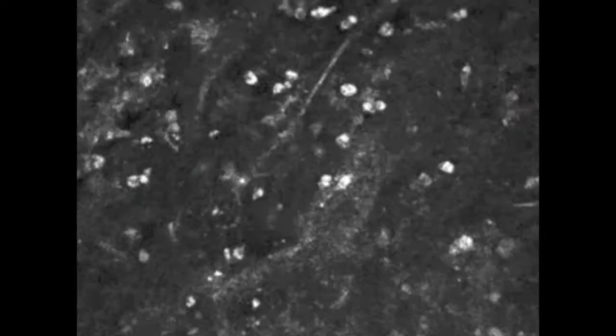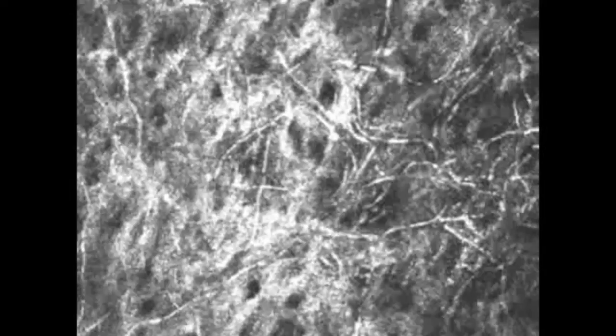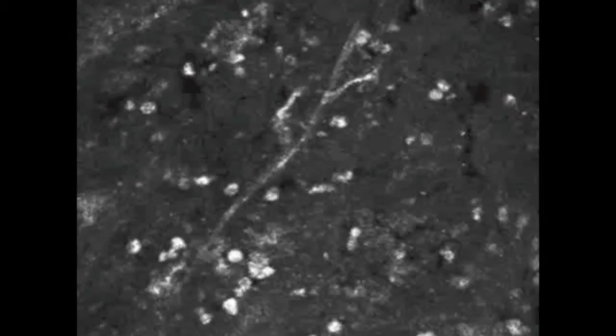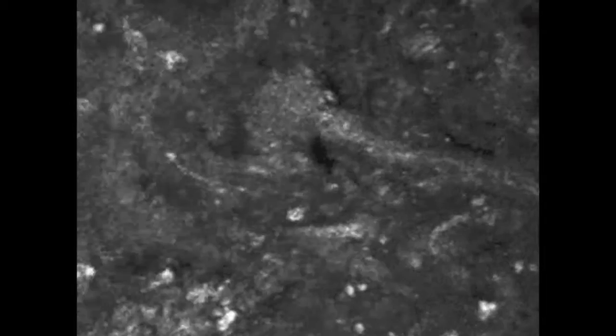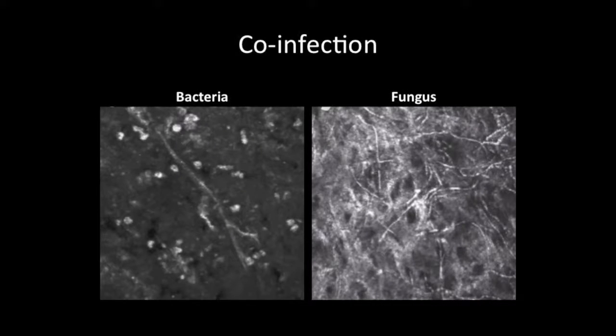Looking closely at the infiltrates with confocal microscopy, we can pan in between the two, and here we see that the lobe on the right is full of hyphal elements indicative of a fungal ulcer. As we pan back to the left, we see scattered white blood cells indicative of a bacterial infection. It's clear that this patient has both a bacterial and fungal infection.